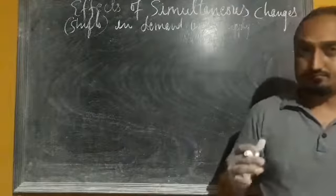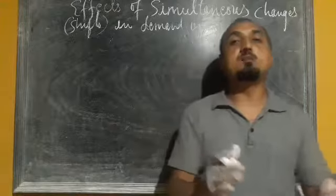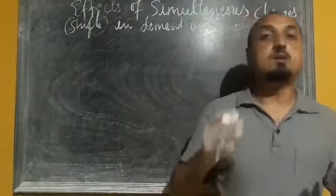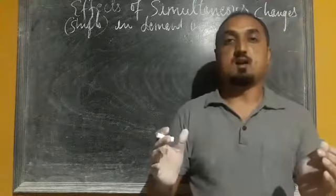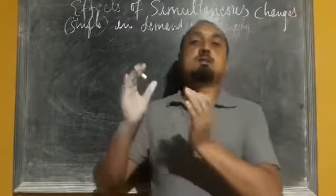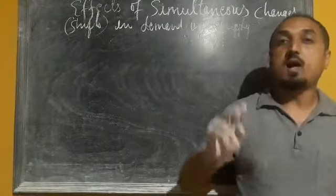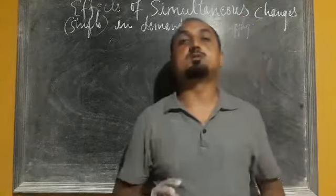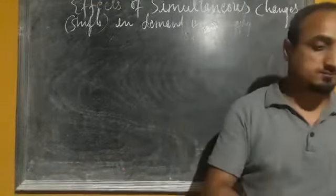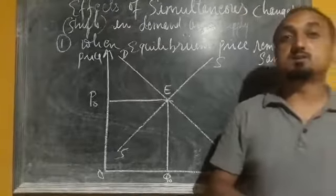We know that normally in a market economy, when demand changes, supply will also change instantly — simultaneously. If demand and supply change simultaneously, there will be three possibilities, and we will discuss those three possibilities with the help of a diagram.